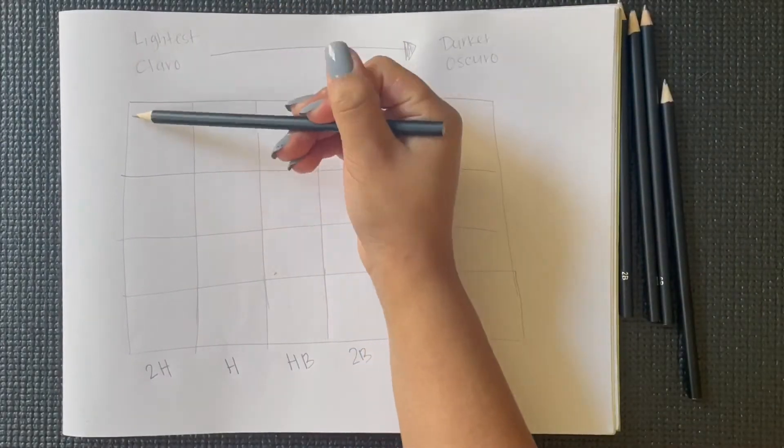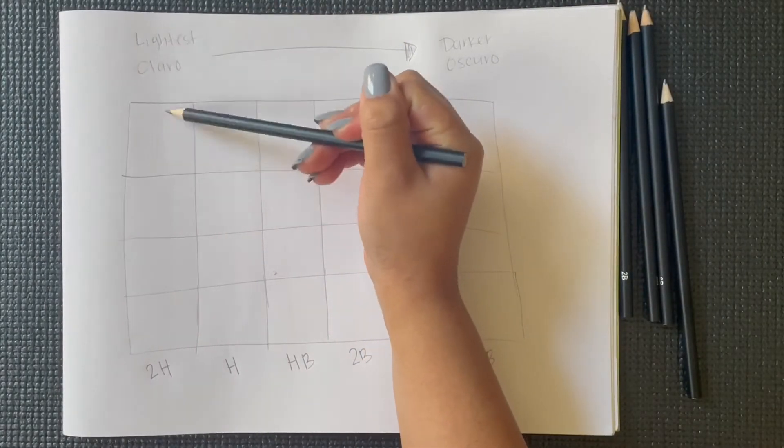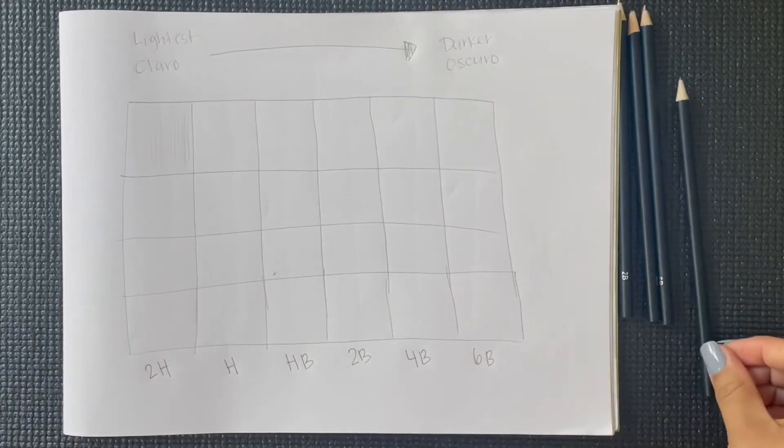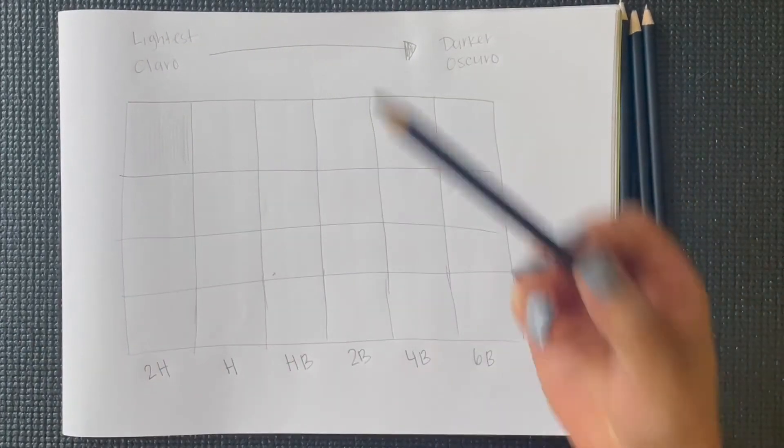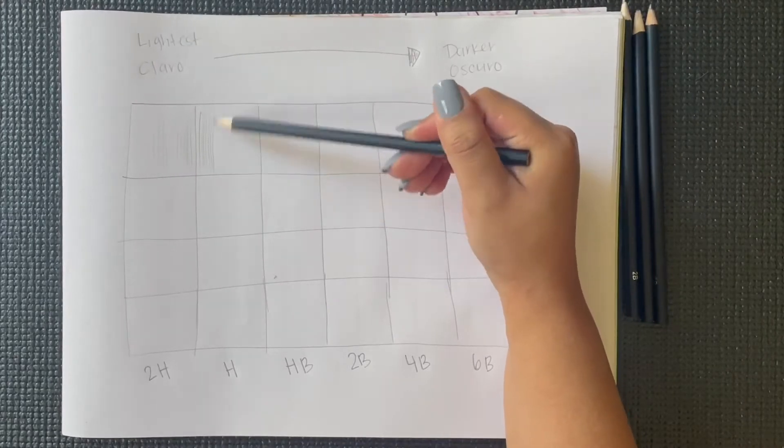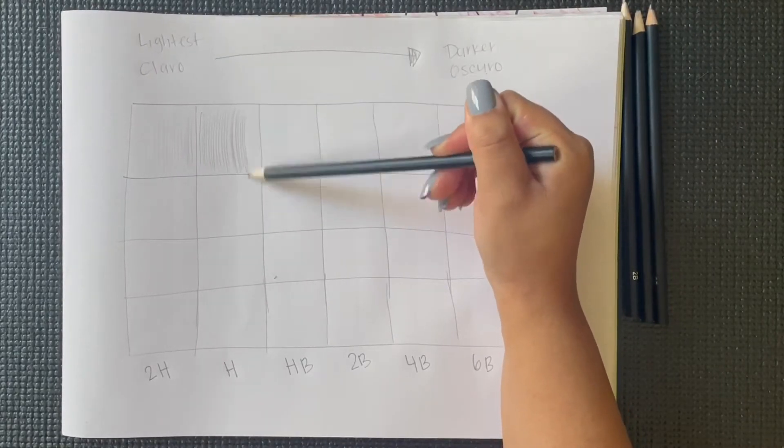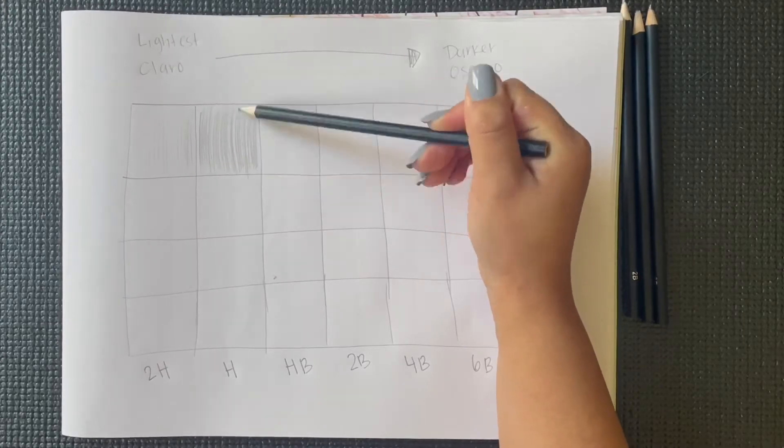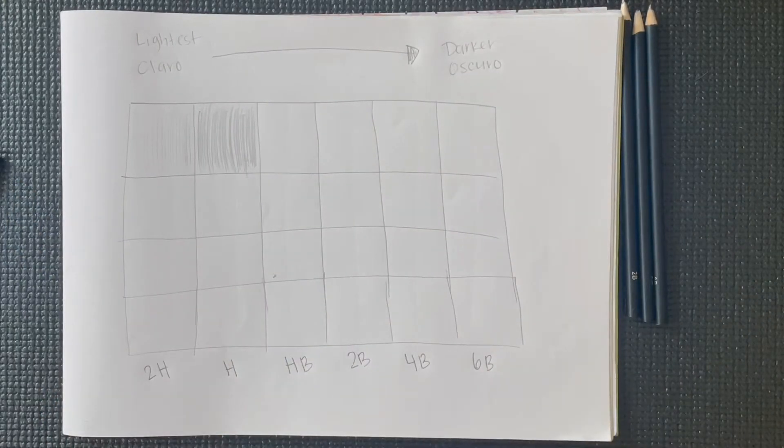We will start by doing the hatching technique. This technique is just drawing some lines going down. Estaremos implementando la técnica de rayado. Estas son líneas que nomás van hacia abajo. Don't forget to be changing your pencil. No se te olvide de estar cambiando el lápiz.